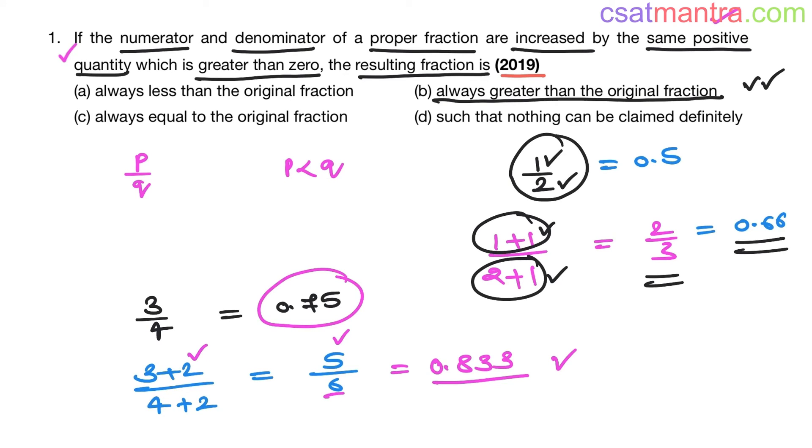Here, instead of 2, you can try with any other positive quantity which is greater than zero. The resulting fraction will be always greater than the original fraction. This is what without loss of generality says. You are not trying with every other value of that positive quantity and not trying every fraction also. Just trying one or two values and then you are generalizing it.